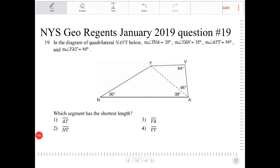In the diagram of quadrilateral NAVY below, angle YNA is 30 degrees, YAN is 38 degrees, AVY is 94 degrees, and VAY is 46 degrees. All those angles are already pre-drawn in the diagram below. Which segment has the shortest length?